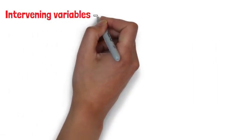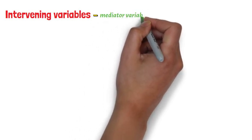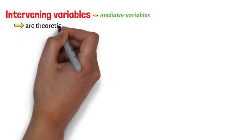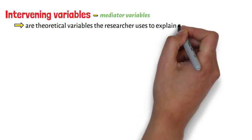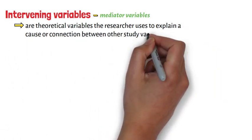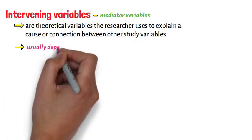Intervening variables, sometimes called mediator variables, are theoretical variables the researcher uses to explain a cause or connection between other study variables, usually dependent and independent ones.